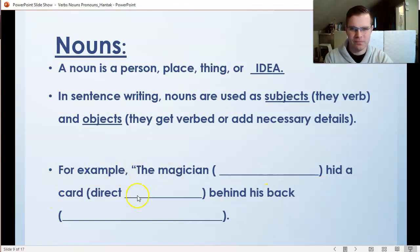For example, the magician hid a card behind his back. There are three nouns in this sentence. Magician is a person. Card is a thing. And his back is a body part, another thing. Magician is a subject. He is the one doing the hiding. The card is what we would call a direct object. The card is the thing getting hidden in this sentence. Back here is what's called an object of the preposition. Back here is adding necessary detail to that sentence. It's telling us where he's hiding the card.